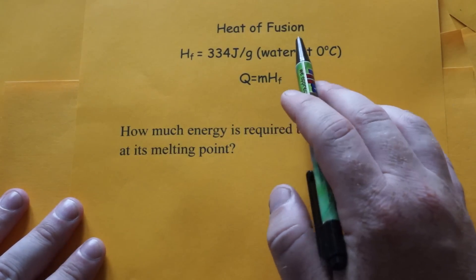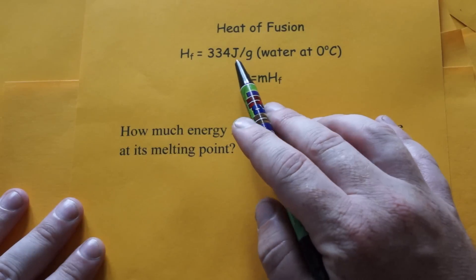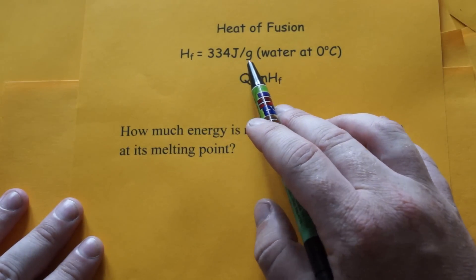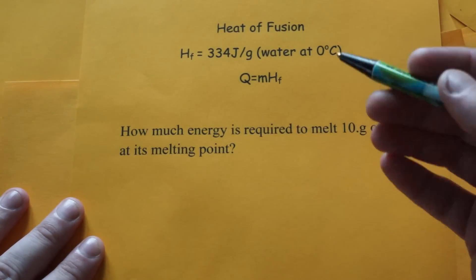That's energy going in to melt ice. If you take the energy out, it takes 334 joules per gram of water to freeze it into ice.